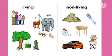Humans, plants, animals and insects are living things. They eat food and drink water. They grow, move and breathe. But non-living things do not eat food or drink water. They do not grow, move or breathe.